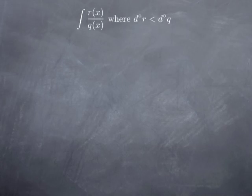So from now on, the first step will always be to check if the degree of the numerator is less than the degree of the denominator. If not, we do long division to reduce the problem to the case where the degree of the top is less than the degree of the bottom.